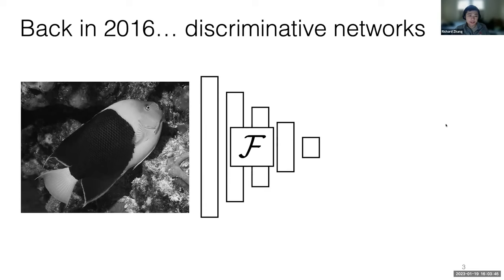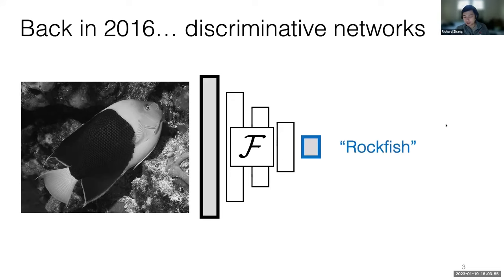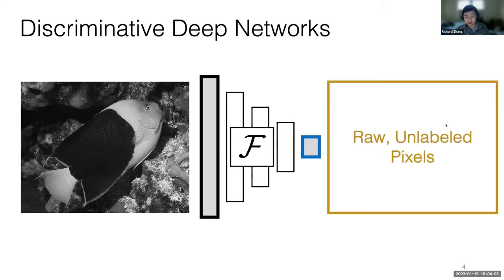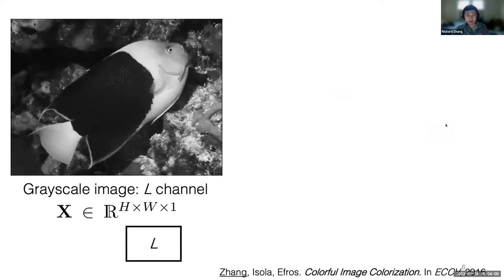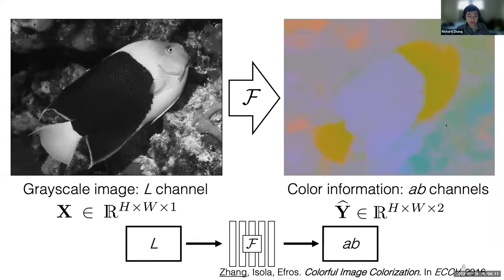Discrimination networks were really taking off and finding success. The way those work is if you have an image, you take a high dimensional input, squish it down to a low dimensional output. For example, just a single classification label, for example, rockfish. What we wanted to see is, is it possible to push networks to produce high dimensional outputs instead and predict raw unlabeled pixels?